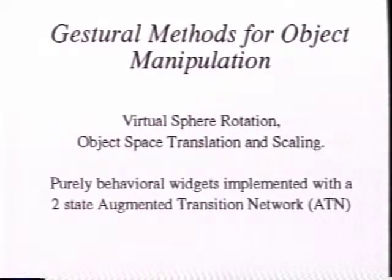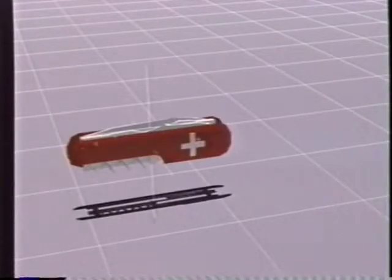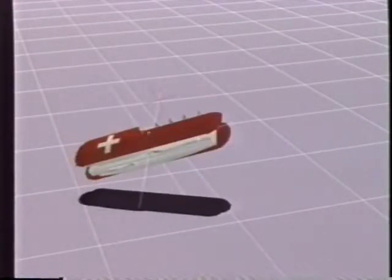Some widgets are entirely behavioral with no actual 3D representation. Here we select a Swiss Army knife and gesturally translate, rotate, and scale it in three dimensions with the 2D mouse.